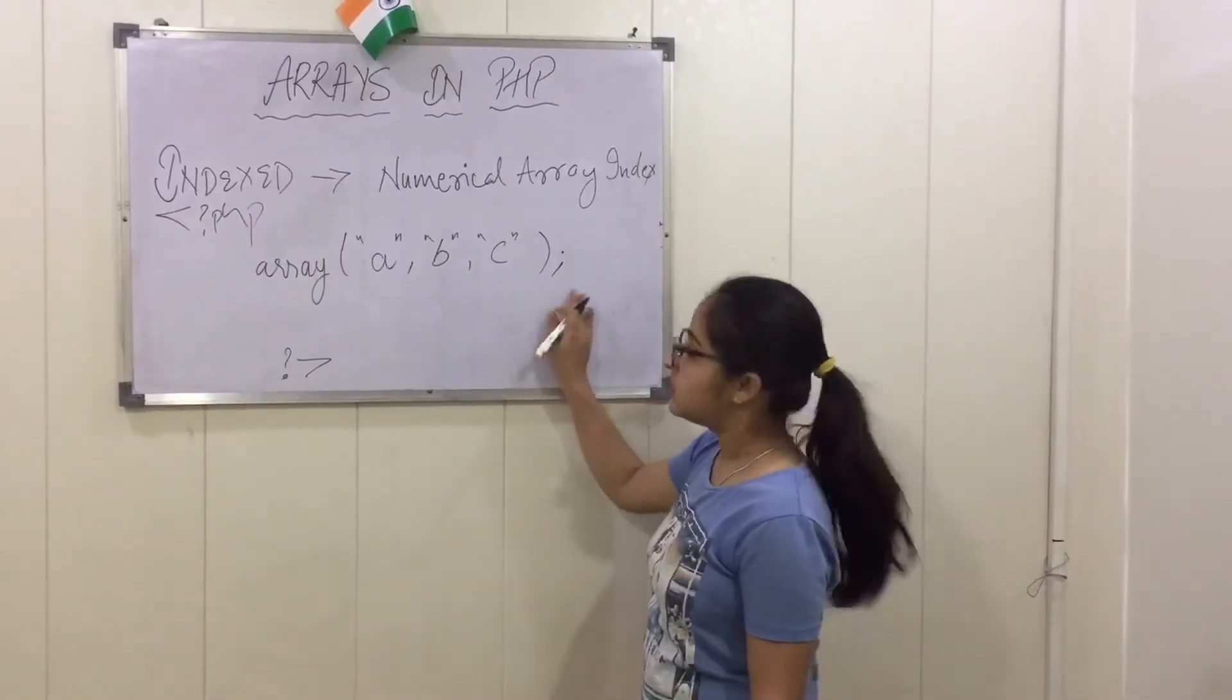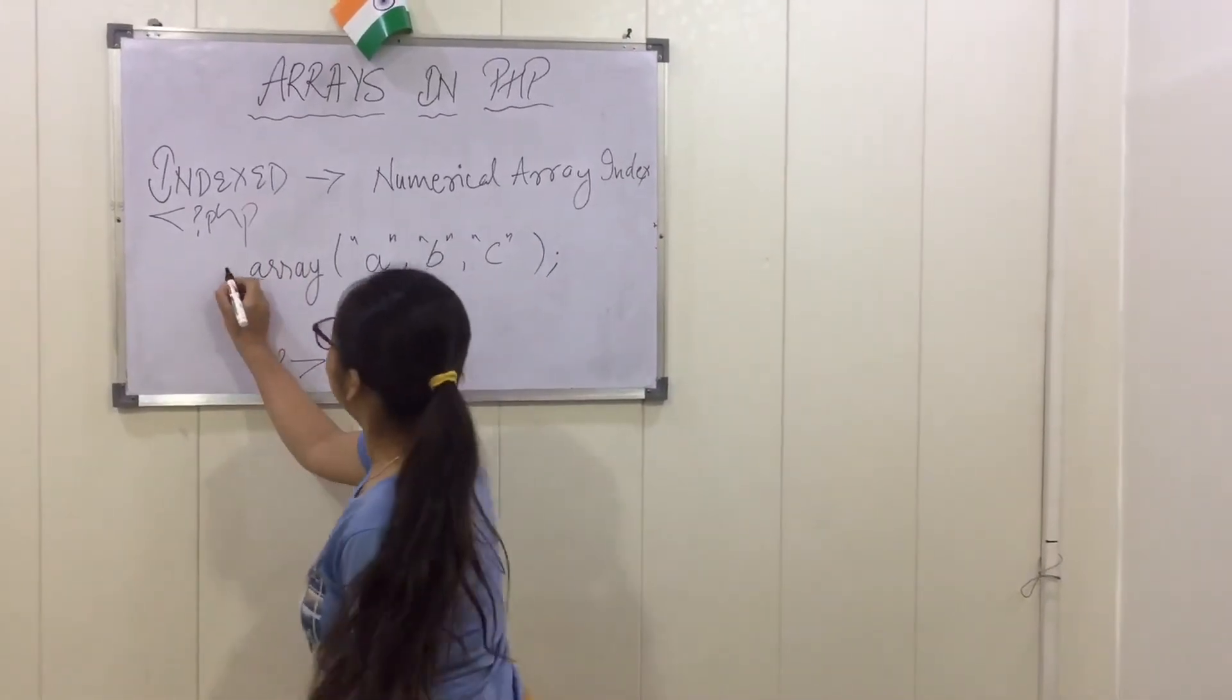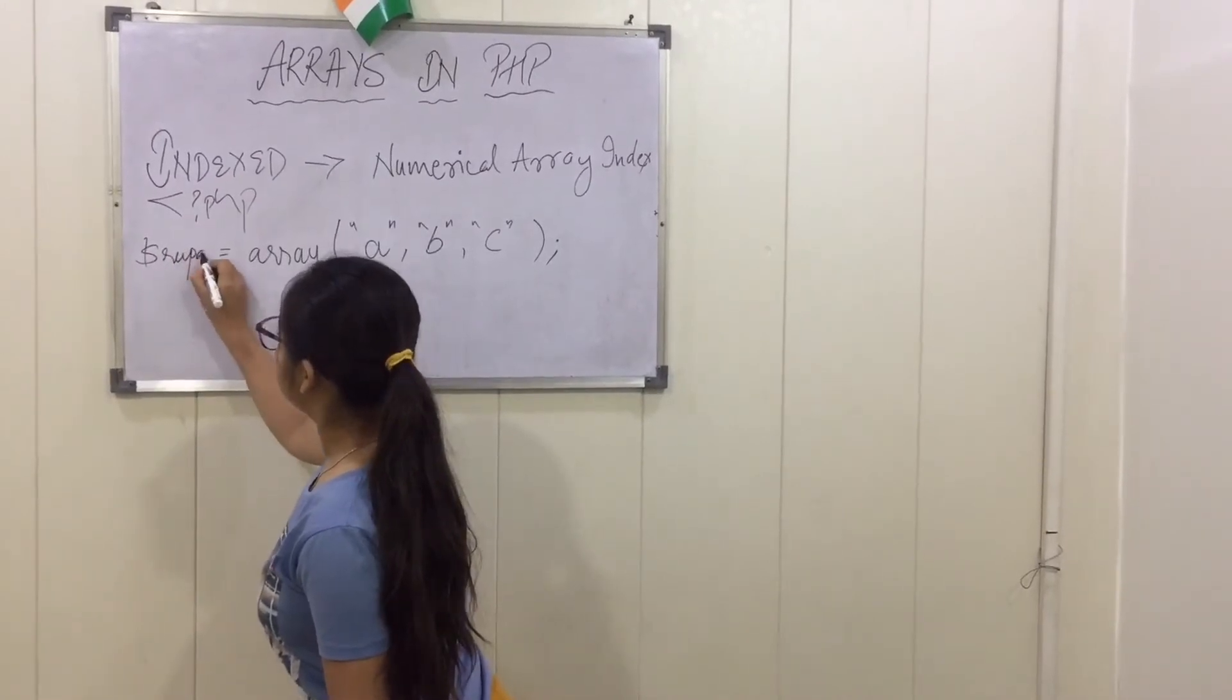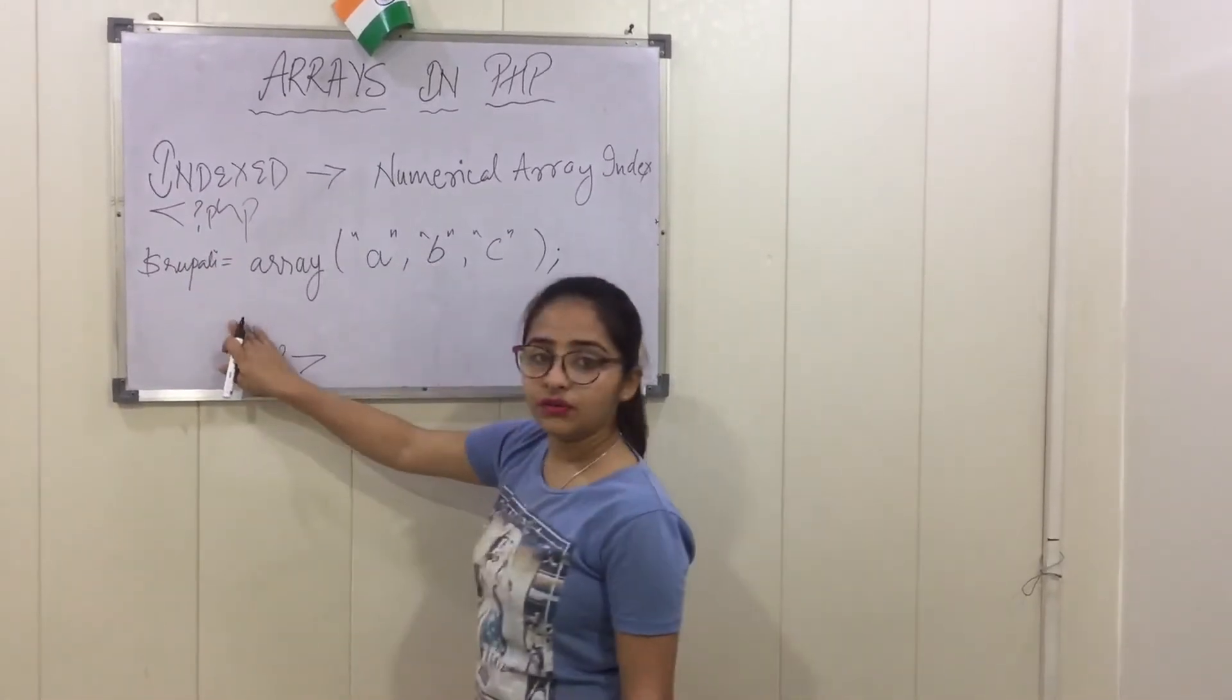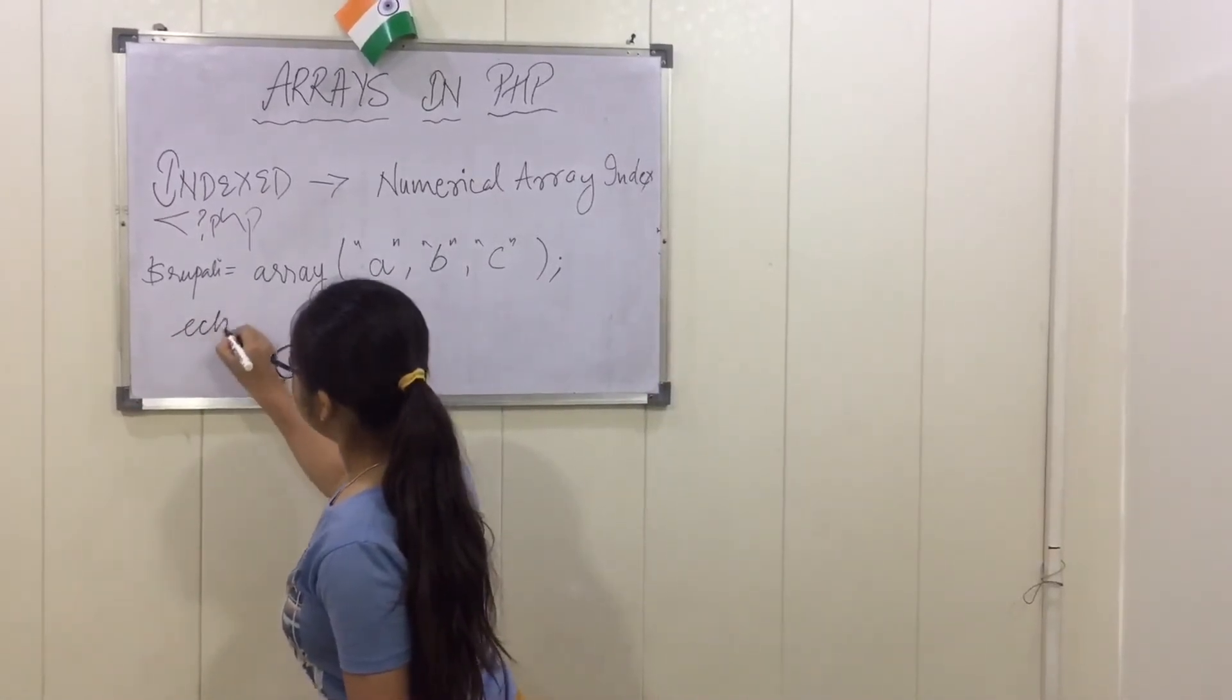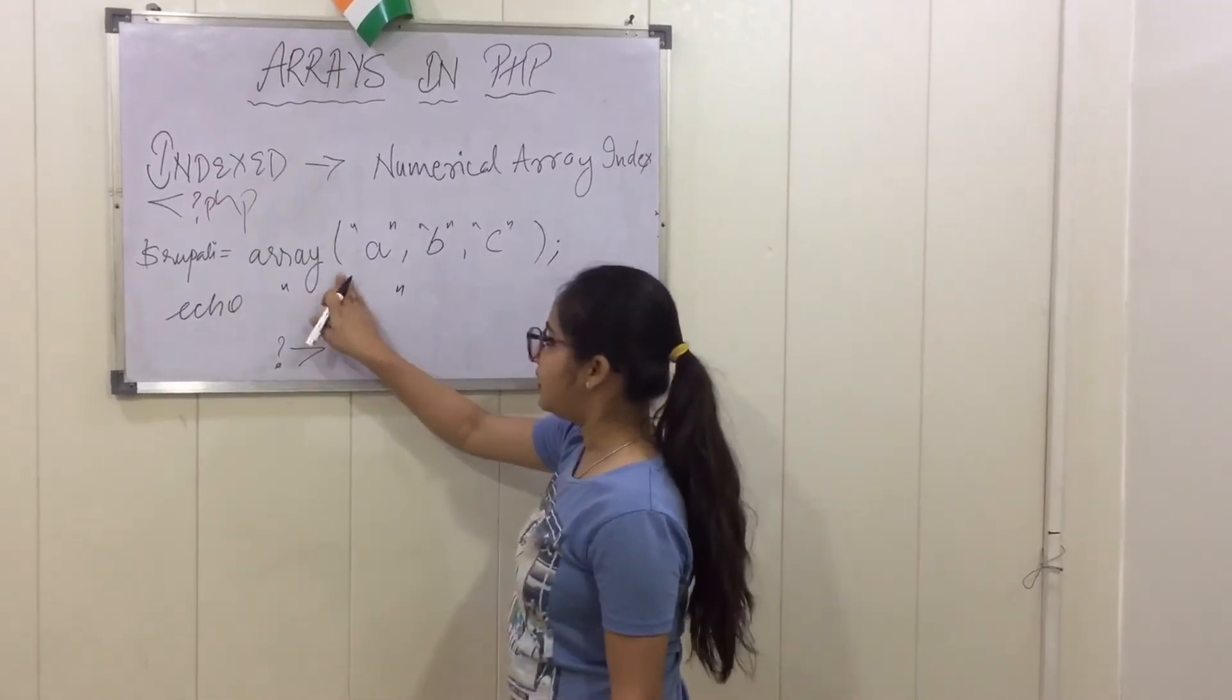And then semicolon after the echo. So now the full array will be declared into a variable. Suppose my variable name is $Rupali. Now we will have to echo our array, that is E-C-H-O echo.